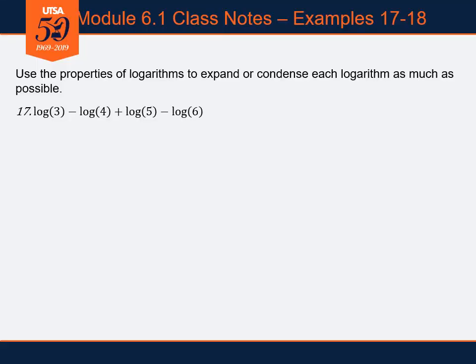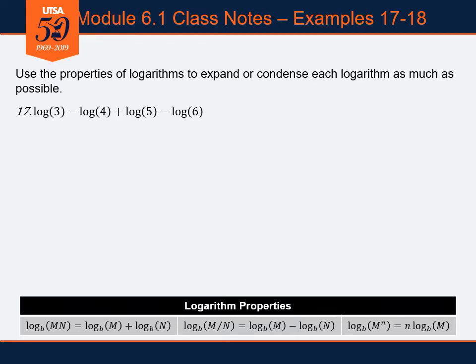Continuing our set of examples using all the properties of logarithms. In our last video, examples 13 through 16, we looked at taking single logarithms and breaking them up into several simpler logarithms. Now in examples 17 and 18, we're going the opposite direction — taking several logarithms and combining them into a single logarithm. Our product rule, quotient rule, and power rule for logarithms are listed, and we'll see which ones apply in question 17: log of 3 minus log of 4 plus log of 5 minus log of 6.